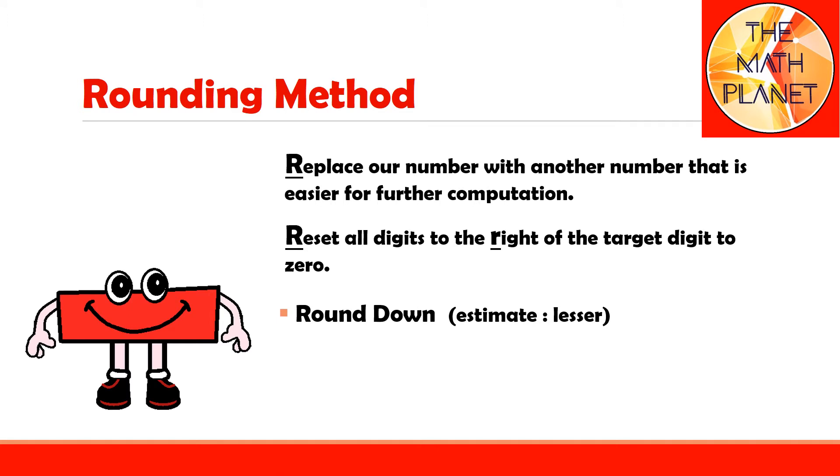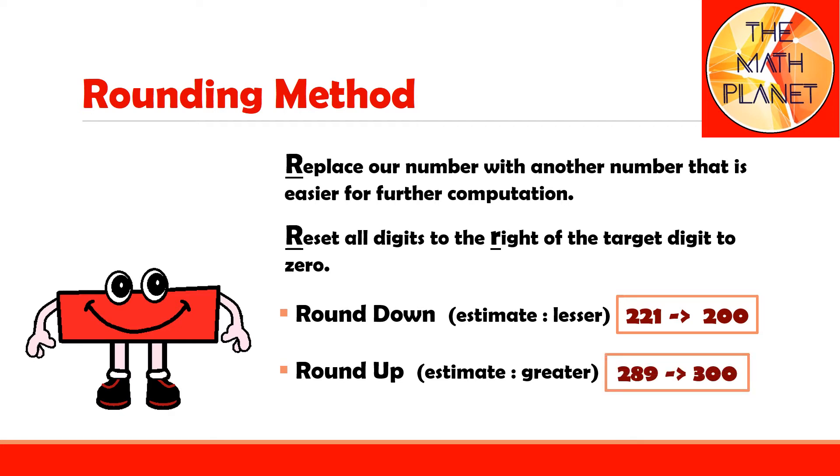If I round down, my estimate will be a lesser number, such as rounding 221 to be 200. When I round up, my estimate is a greater number, such as rounding 289 to be 300.